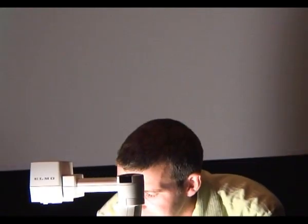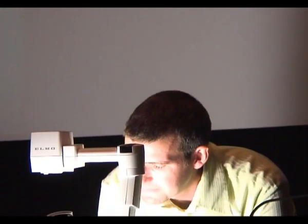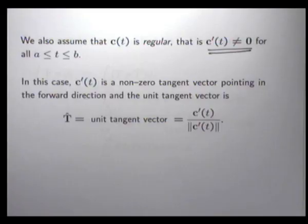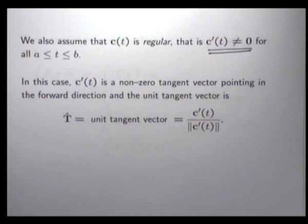Another important piece of information that we're going to assume is that the vector function c is regular, in the sense that the derivative is nowhere the zero vector. Why? Well, we're going to divide by the length of c-dash at some point, so we don't want to divide by zero.